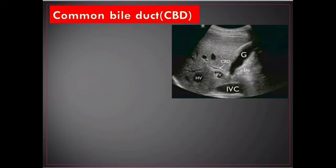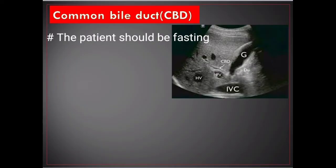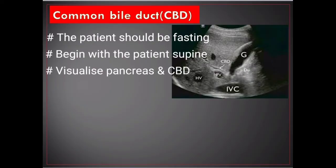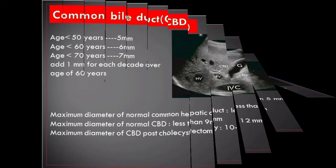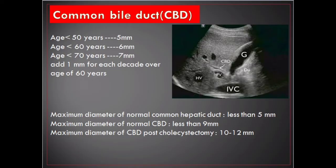Good color Doppler capabilities are useful when assessing vessels versus ducts. For scanning technique, the patient should be fasting. Begin with the patient supine, visualize the pancreas, and visualize the common bile duct in the head of the pancreas. Follow the common bile duct back into the liver at the porta hepatis and measure the diameter of extrahepatic bile ducts.